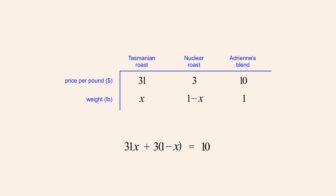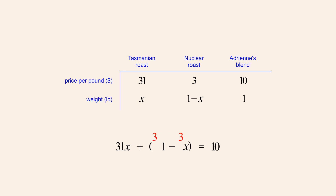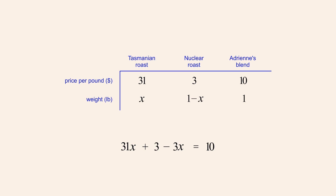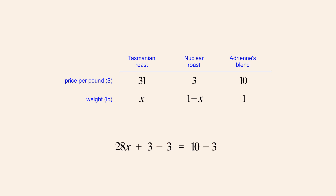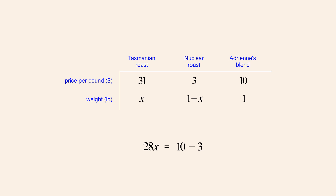We can now solve this equation for x. We start by distributing the 3 to the two terms in parentheses. We can then multiply 3 times 1 and eliminate the parentheses. Combining like terms, we subtract 31x minus 3x to get 28x. Subtracting 3 from both sides of the equation allows us to cancel the positive and negative threes on the left, leaving the equation 28x equals 10 minus 3, or 28x equals 7.